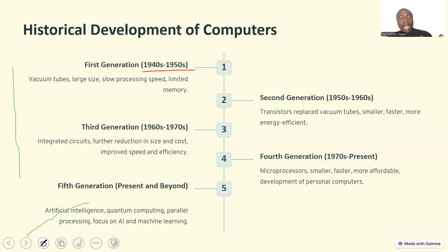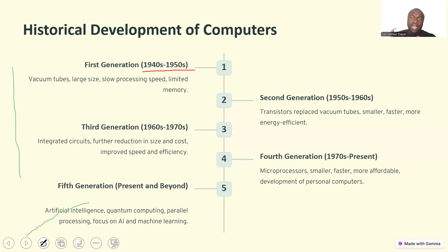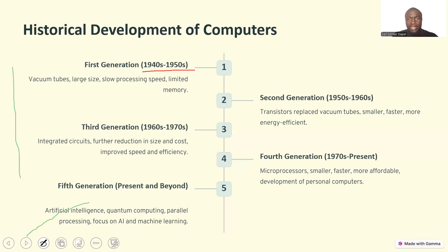The second generation, from the 1950s to the 1960s, saw the major advancement of transistors. Transistors are small devices that replaced vacuum tubes. They are smaller in size and more efficient. The third generation, from the 1960s to the 1970s, produced what we call integrated circuits — also called ICs — which are smaller than transistors and have higher processing speed.